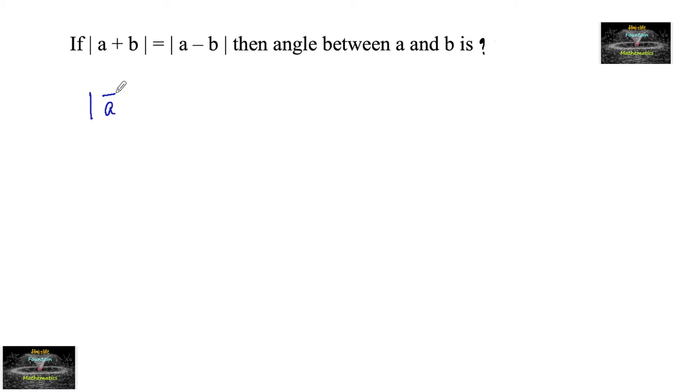Given that |a + b| = |a - b|, squaring on both sides, we have |a + b|² = |a - b|².